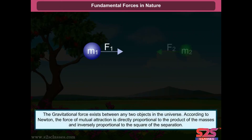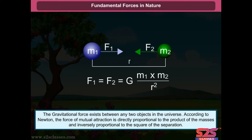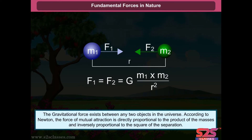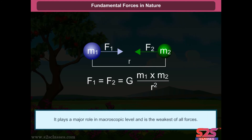Gravitational force. The gravitational force exists between any two objects in the universe. According to Newton, the force of mutual attraction is directly proportional to the product of the masses and inversely proportional to the square of the separation. It plays a major role at the macroscopic level and is the weakest of all forces.